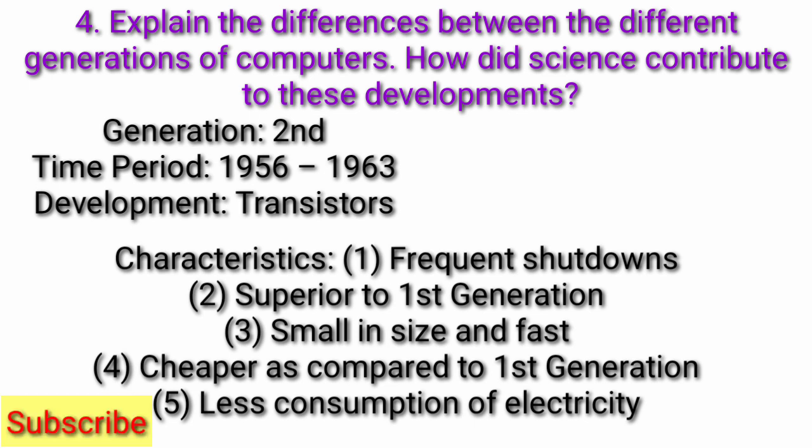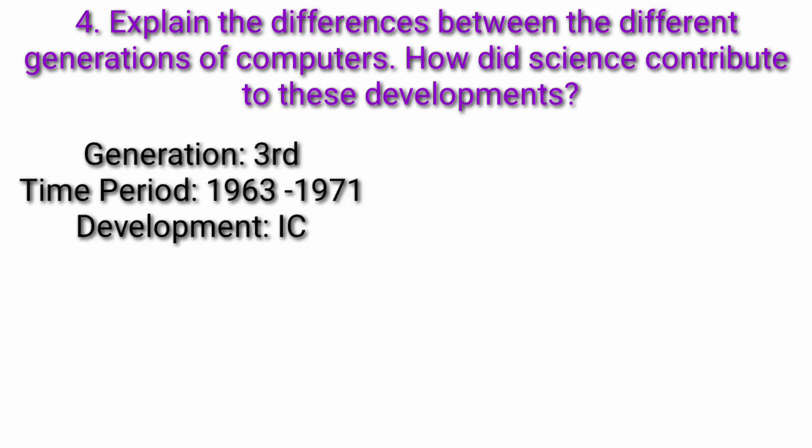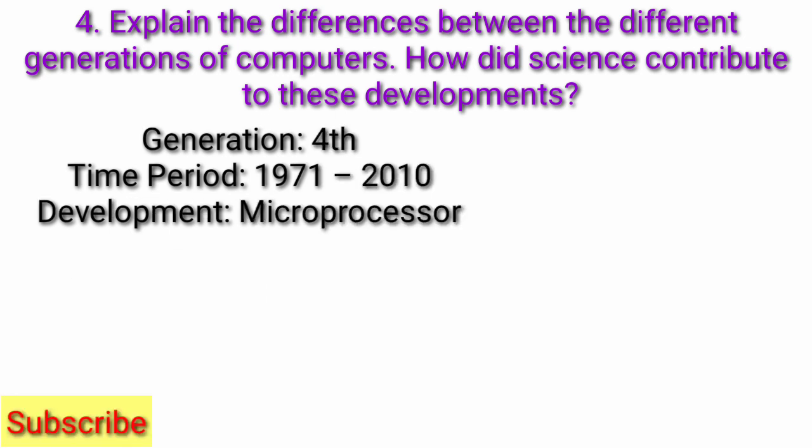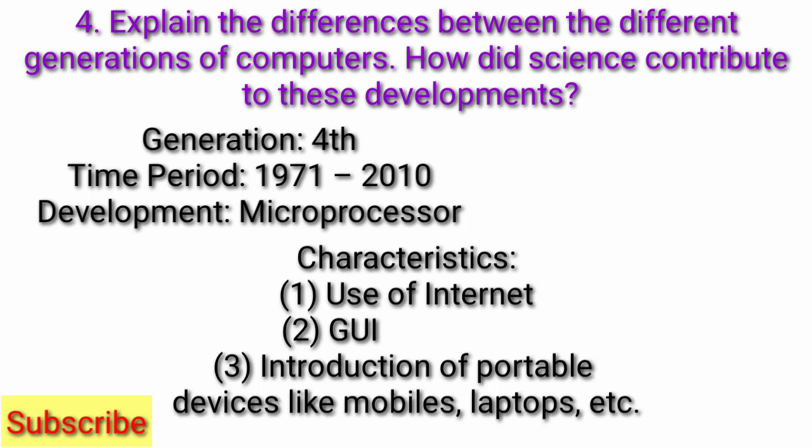Characteristics: Frequent shutdowns, Superior to first generation, Smaller in size and fast, Cheaper as compared to first generation, Less consumption of electricity. Generation 3rd, Time period 1963-1971, Development: IC, Characteristics: Keyboards and monitors, OS, Smaller and still cheaper. Generation 4th, Time period 1971-2010, Development: Microprocessor.